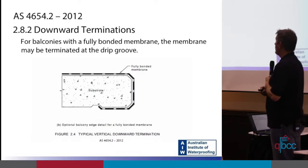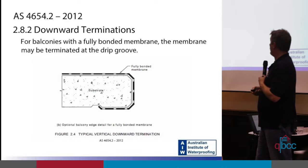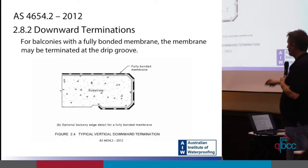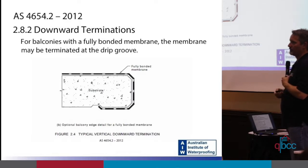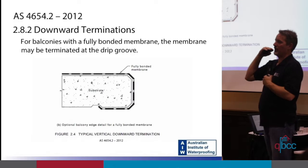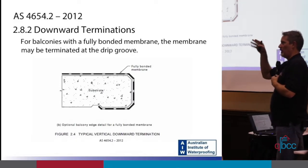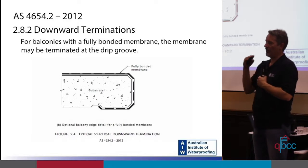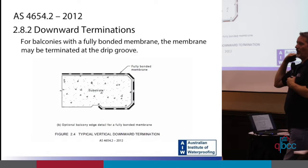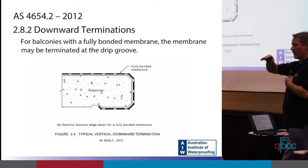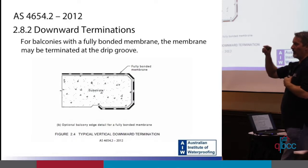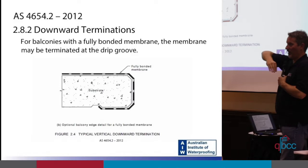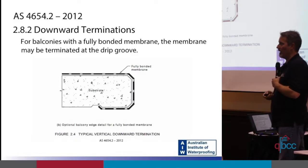For downward terminations on balconies with a fully bonded membrane — either liquid or sheet — the membrane may be terminated at the drip groove: waterproof the top, come down the face, come underneath, terminated in the drip groove. The alternative is a drainage angle with a kick and weep holes — and obviously you can't fill the weep holes with sealants or grout. I highly recommend you cut a rebate for the horizontal leg so it sits flush and you have positive drainage at membrane level. If you don't, you'll get a millimeter lip at the front where water can sit, and it'll likely kick the front of your tile up, and the first hole will quite often run backwards.